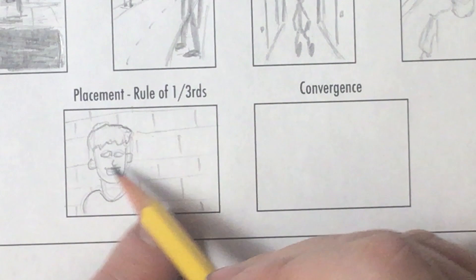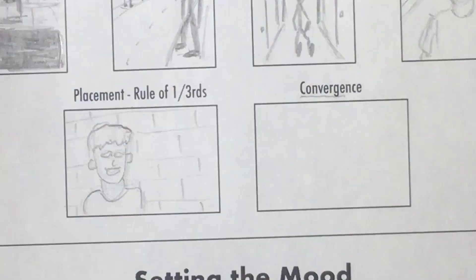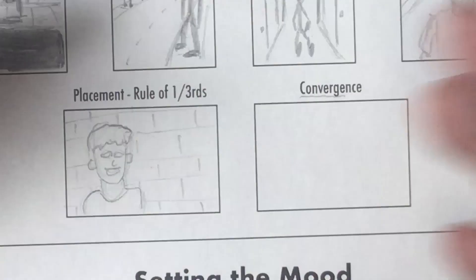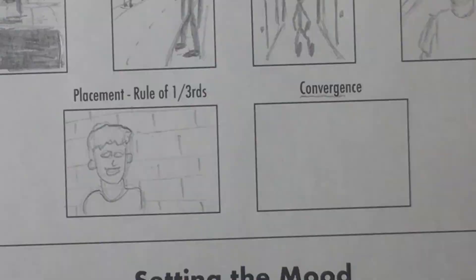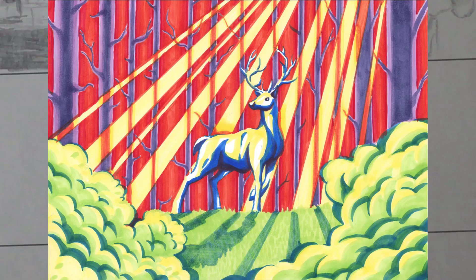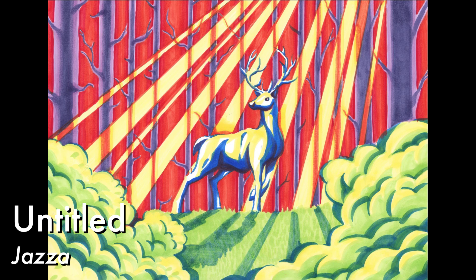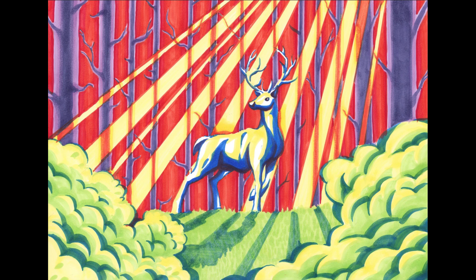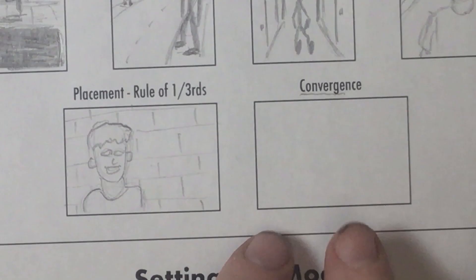Convergence. Let's look at the root word: converge. When things converge, it means they come together. To see an example of this, I have a picture here from Josiah Brooks, also known as Jazza — he has an awesome YouTube channel all about making art. In this marker drawing, we see lots of lines that all point towards the main subject, that deer right in the center. We have the lines of the tree trunks pointing straight down towards the deer, the shadows of those trunks diagonally pointing up towards the deer, and the rays of light shining down from the sky pointing towards the deer.